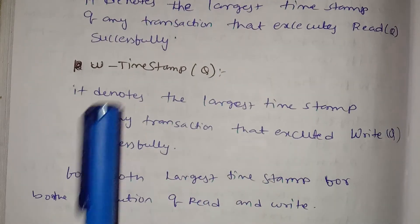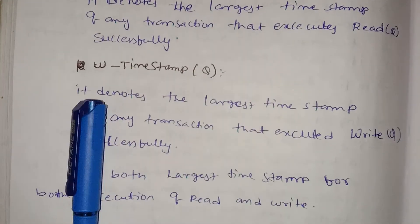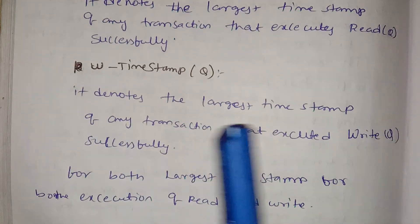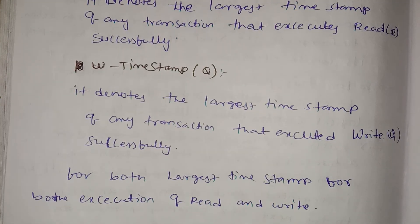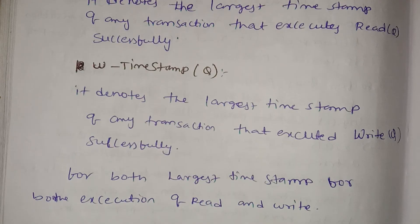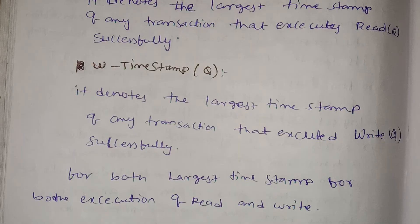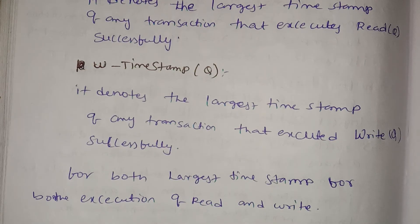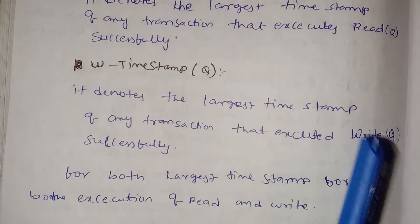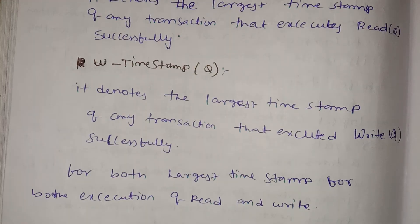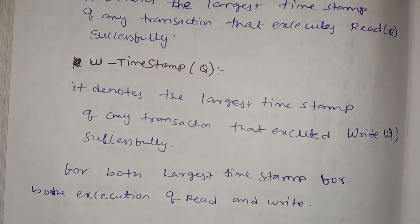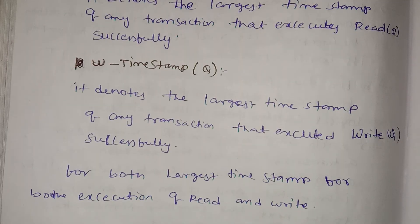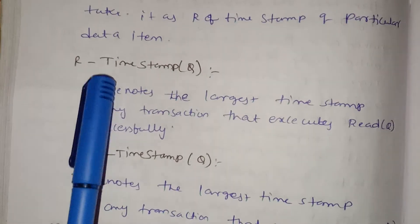W(Q) means write timestamp of Q. It denotes the largest timestamp of any transaction that has already executed write Q successfully. This is the largest timestamp for the write operation on data item Q. For both read and write, we track the largest timestamp.